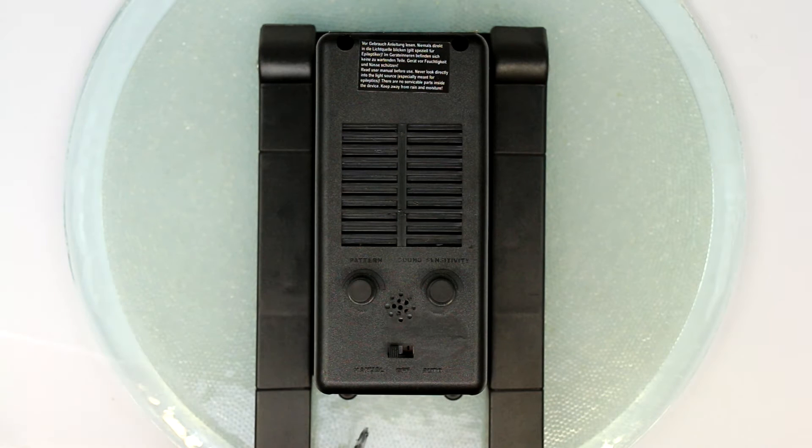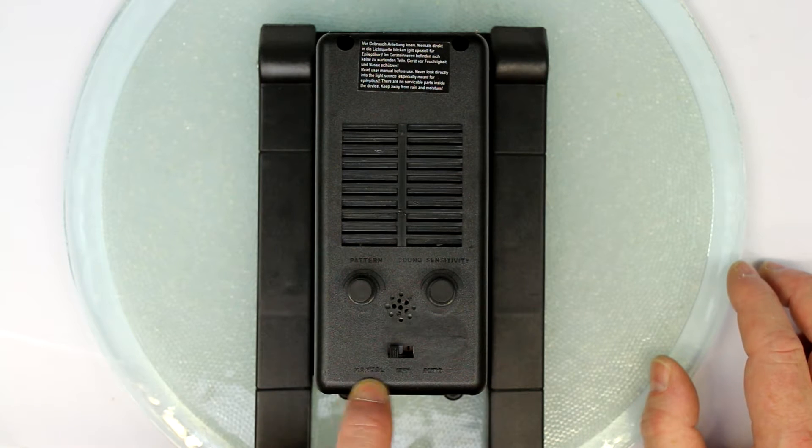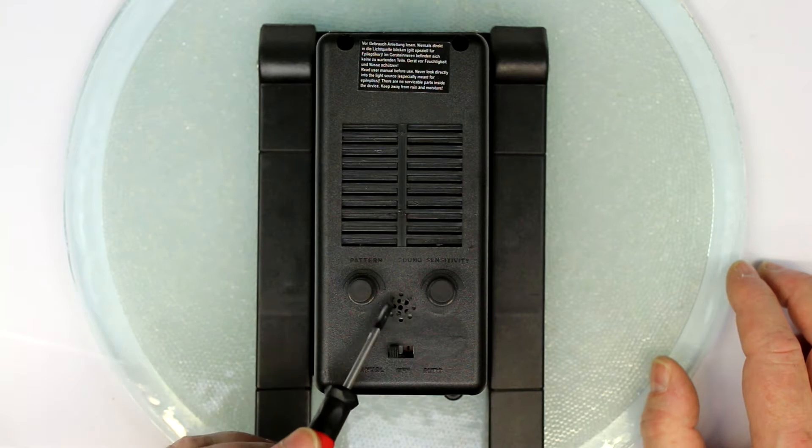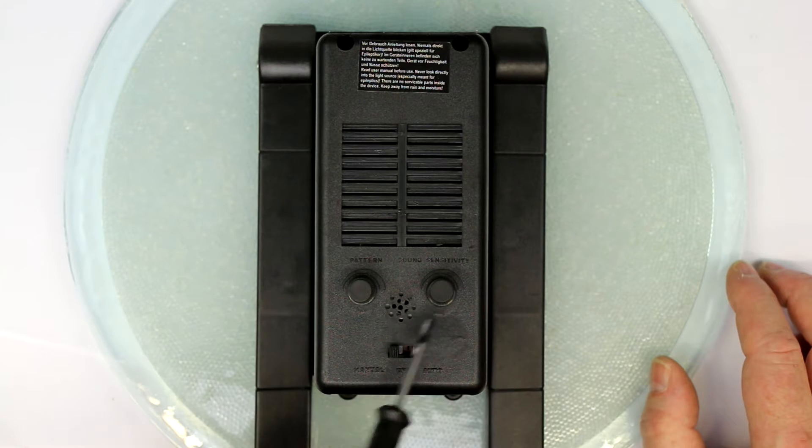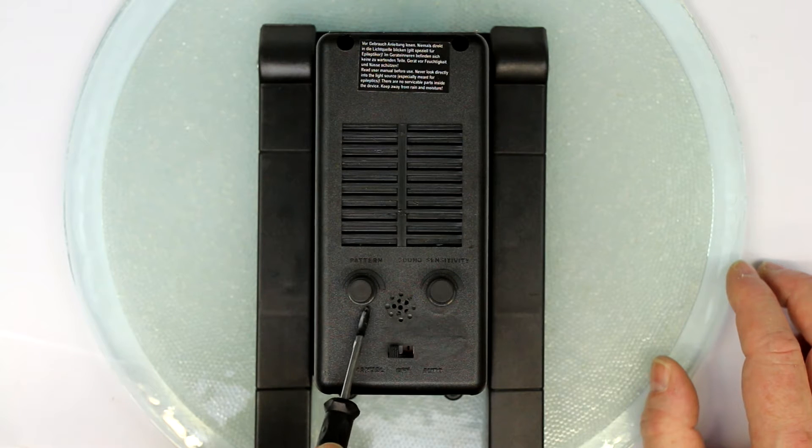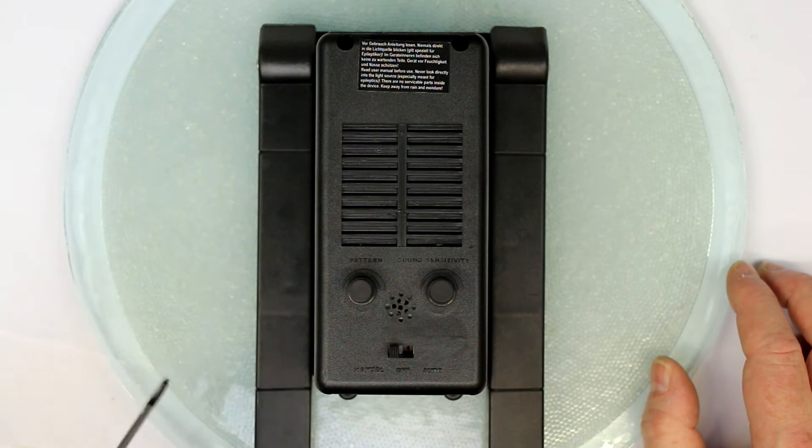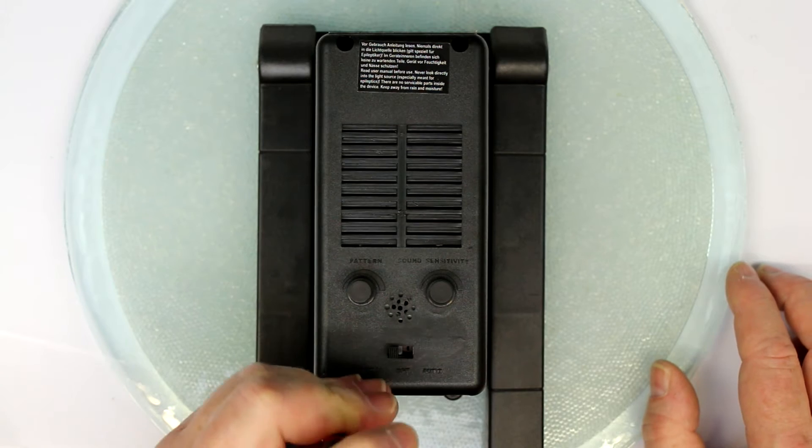Before we take a look at the innards, just a little explanation of what you can see here. The little switch is for manual mode, off, and auto mode. Auto is, as far as I remember, you can see here is a little microphone below, and you can set the sensitivity and the pattern. Sensitivity is for the sensitivity of the microphone, because this can be sound controlled.